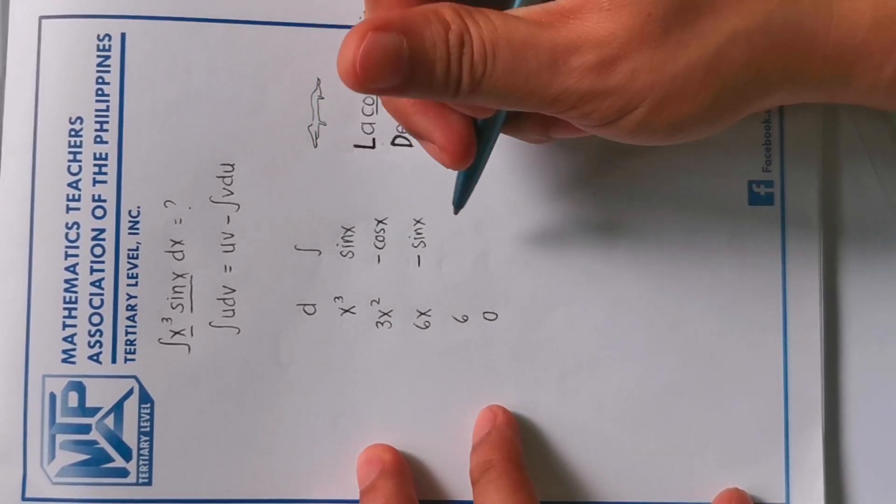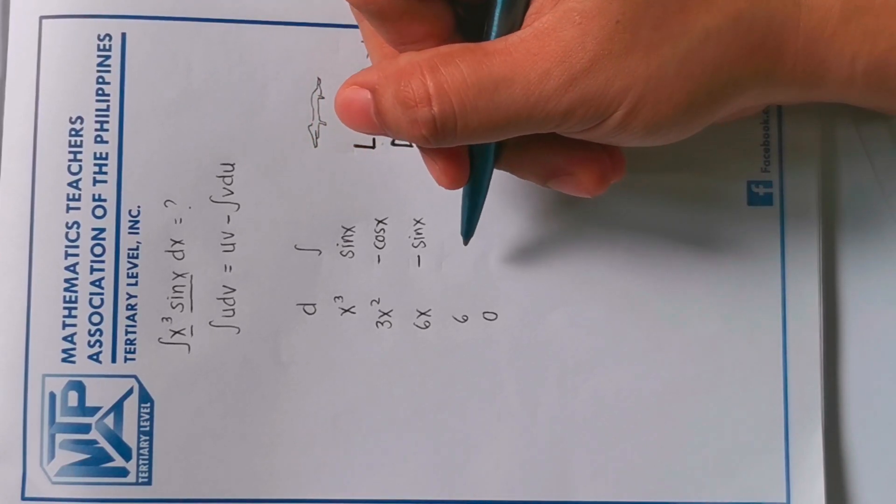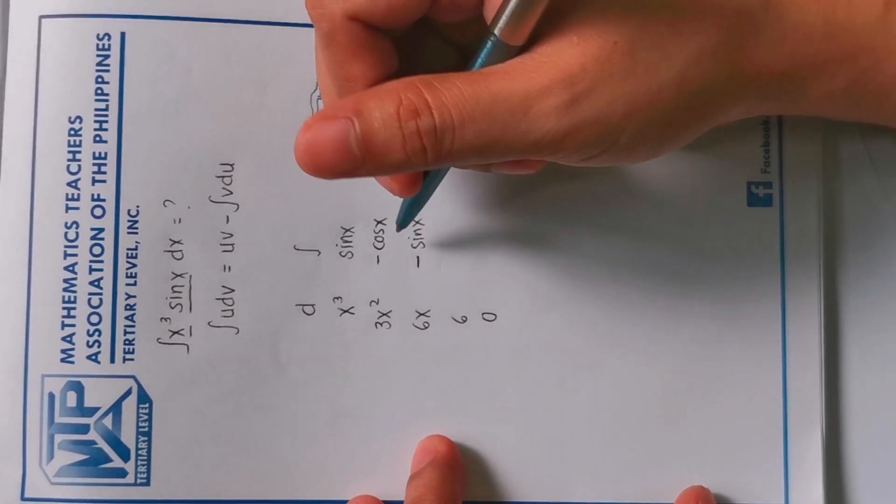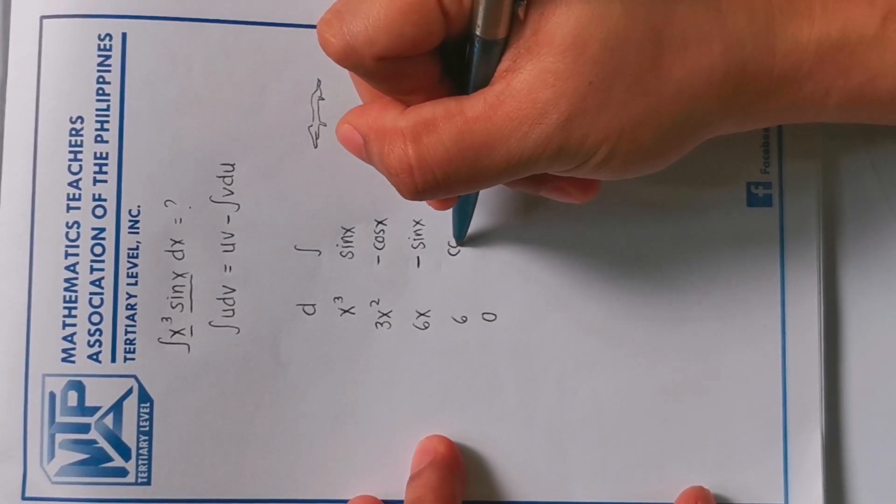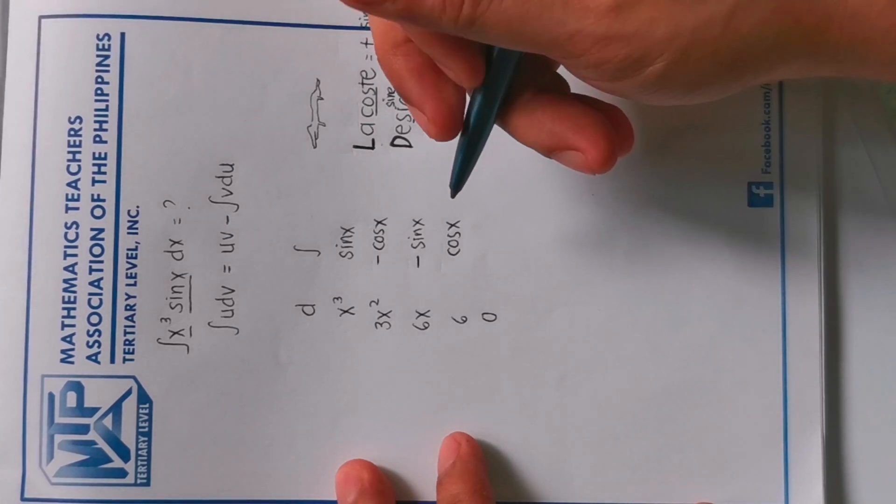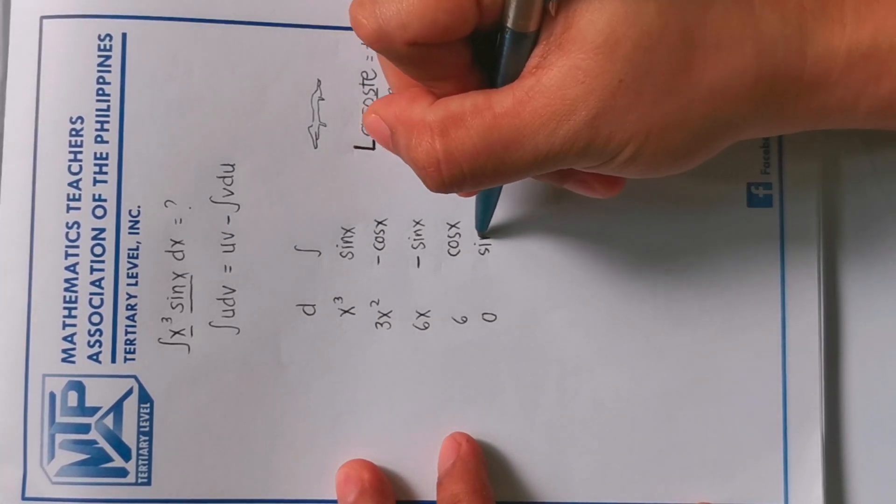So the integral of sin x again is negative cos, but we have a negative sign already, so it becomes positive, positive cos x. And the integral of cos x is sin x.